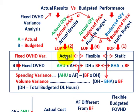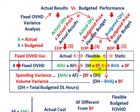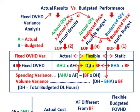Now we can do our variance analysis between our actual, flexible, and static amounts. For fixed overhead, our actual amount is just the actual hours used times some actual fixed overhead rate. The flexible amount is a little different — it's the denominator hours times the budgeted fixed overhead rate, where the budgeted fixed overhead rate comes from our static budget and the denominator hours are based on the total budgeted direct labor hours for the period.